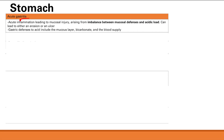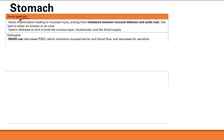Now let's talk about etiologies — how can we get an imbalance between mucosal defenses and acidic load? First, if you use too much NSAIDs, chronic NSAID use decreases prostaglandin E2. Prostaglandin E2 is super important — it maintains the mucous barrier, helps with blood flow to the stomach, and decreases H+ secretion. So you lose all of that and you're very much at risk for mucosal injury.